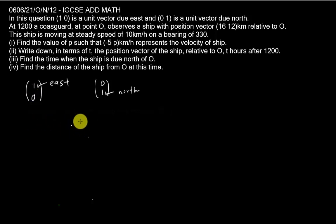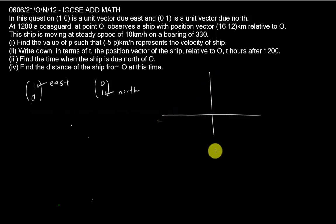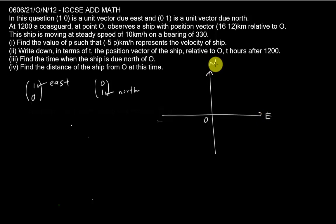The question says at 1200 — meaning 12 pm — a coast guard at point O. O here means the origin. If you have the Cartesian plane, O has coordinate (0,0), with east along the horizontal axis and north along the vertical axis.